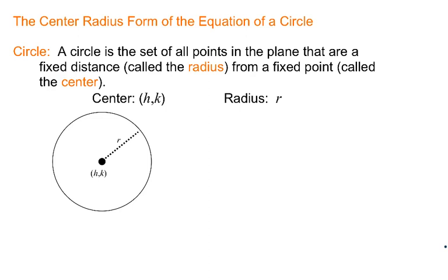A circle is the set of all points in the plane that are at a fixed distance, which is called the radius, from a fixed point, called the center.